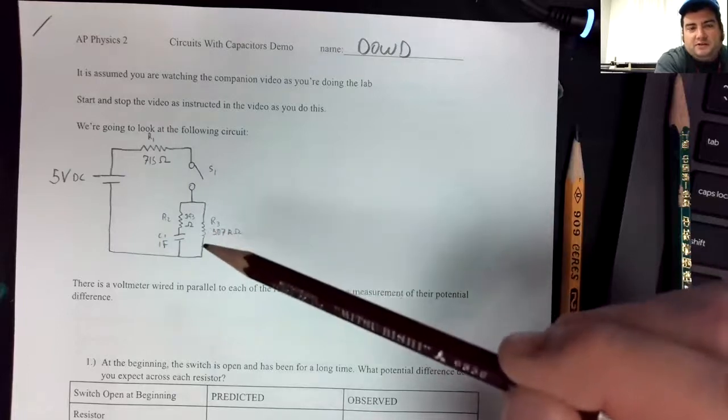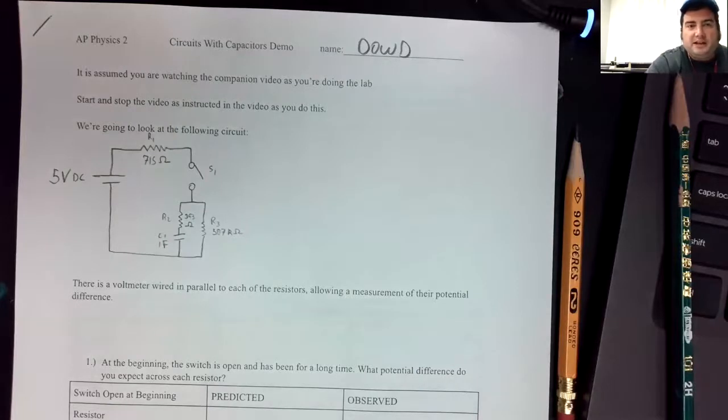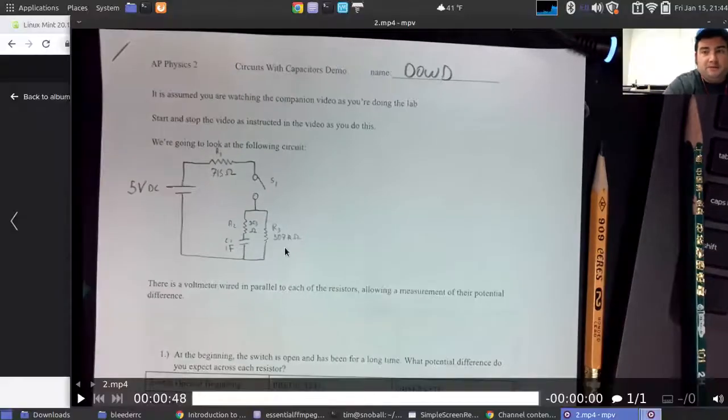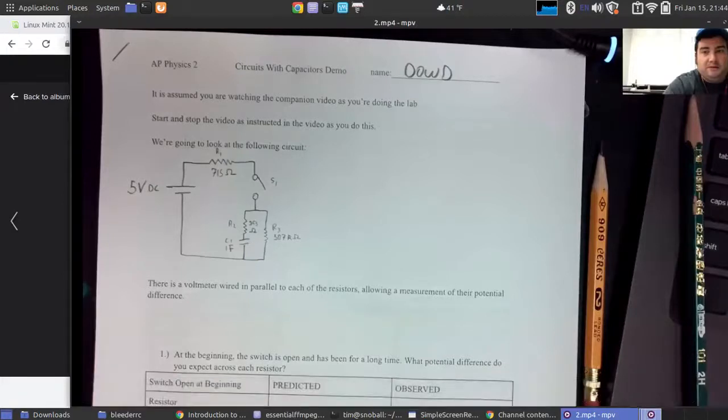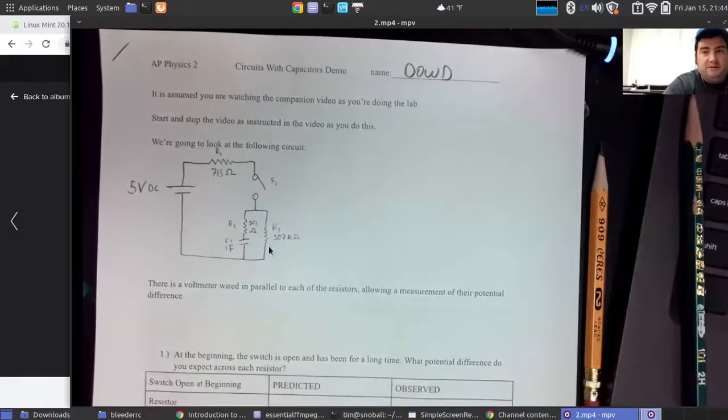What I'd like to do first is make a prediction before I hook up any of this stuff. Because the bleeder resistor's value is so much bigger than the resistance in series with the capacitor, at least at first when the capacitor acts as a wire, almost all the current is going to be traveling in this branch. So the circuit's not going to be that different than a series RC circuit like we saw in the previous video.